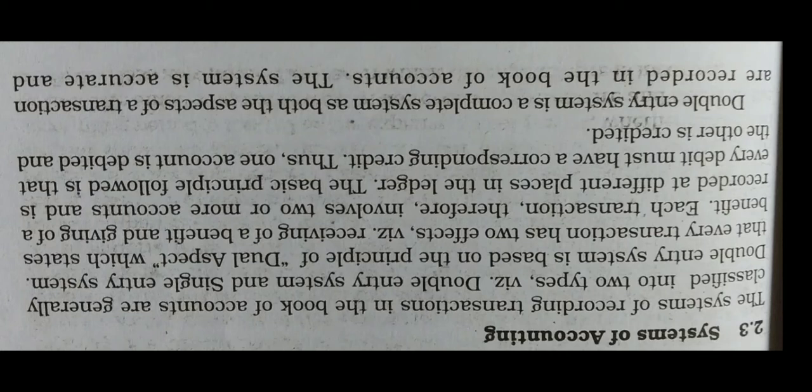Double entry does not mean recording a transaction two times, but it means recording a transaction from both sides. For example, if we have purchased furniture for cash, then two accounts will be affected: furniture and cash. Both are affecting each other in opposite directions — furniture is coming in and cash is going out. So one account will be debited and the other credited. In simple words, recording both aspects of a business transaction in terms of debit and credit is called double entry system, which is based on the principle that every debit has a credit and every credit has a debit.